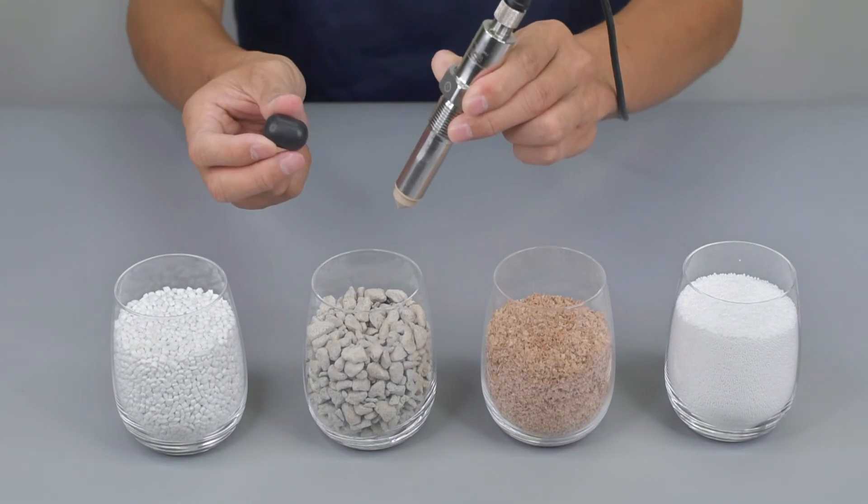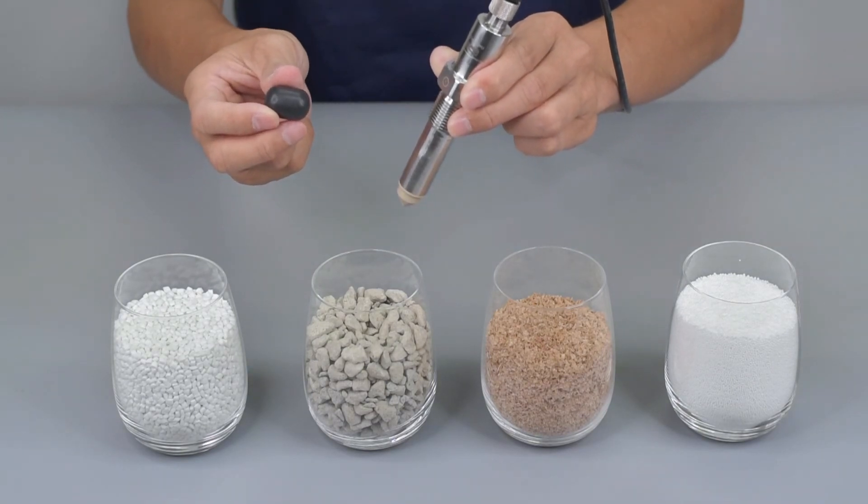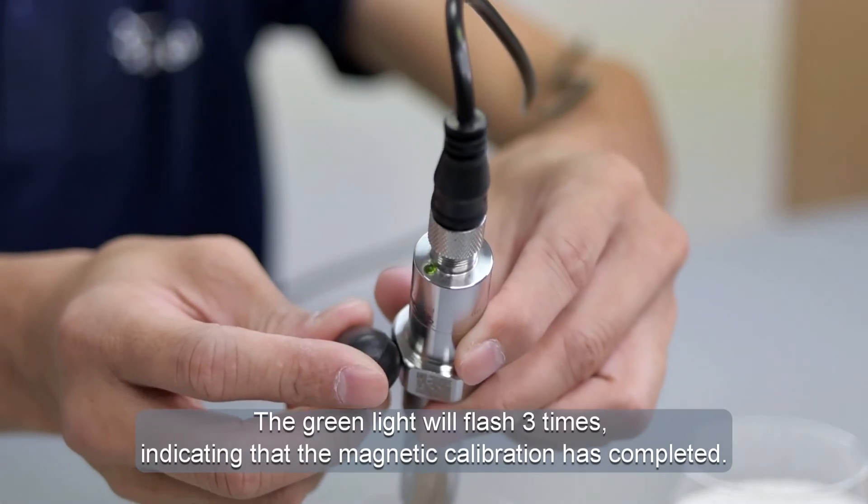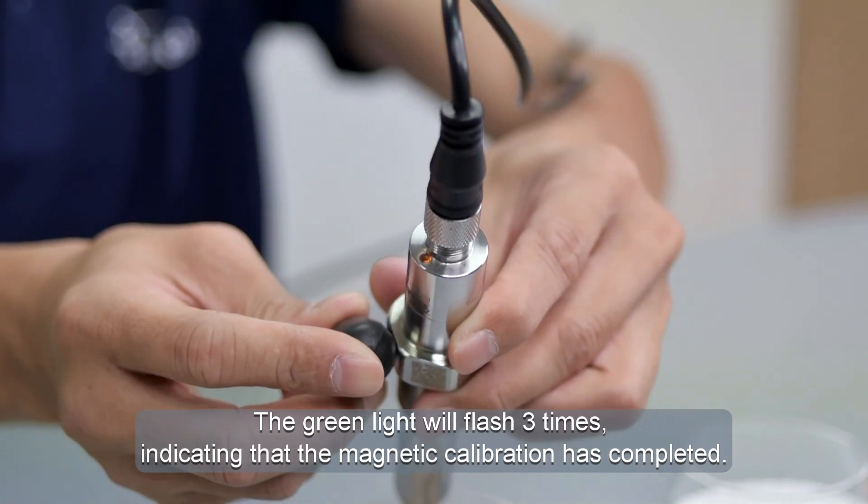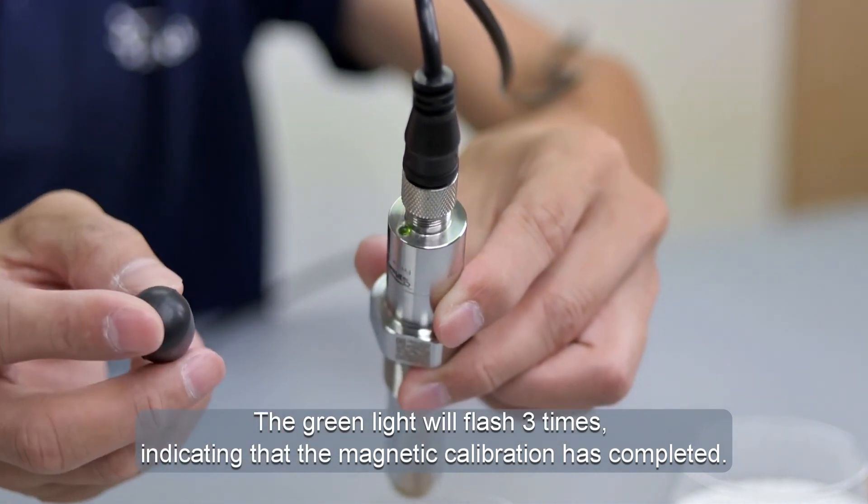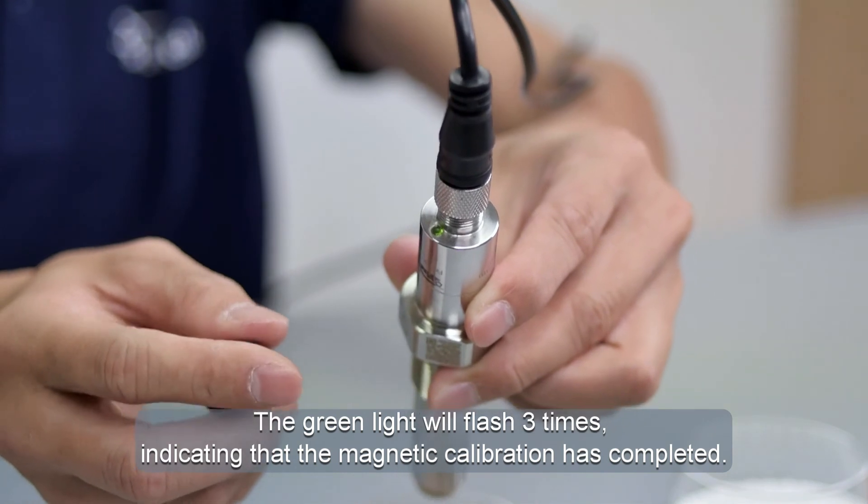The magnet is again close to the hexagonal side. Move the magnet away after one second. If the green light flashes three times, this means that the magnetic calibration has completed.